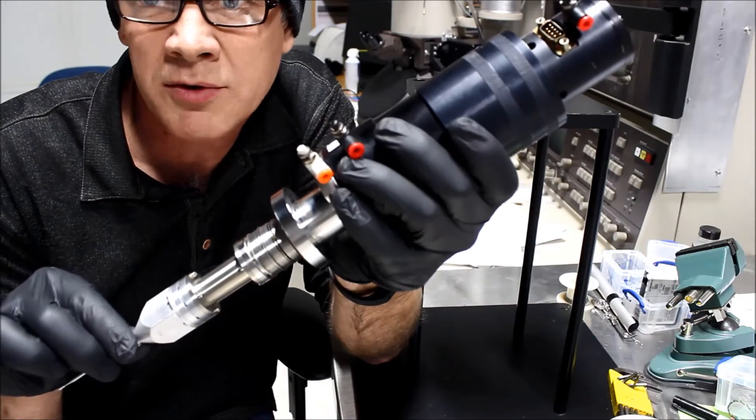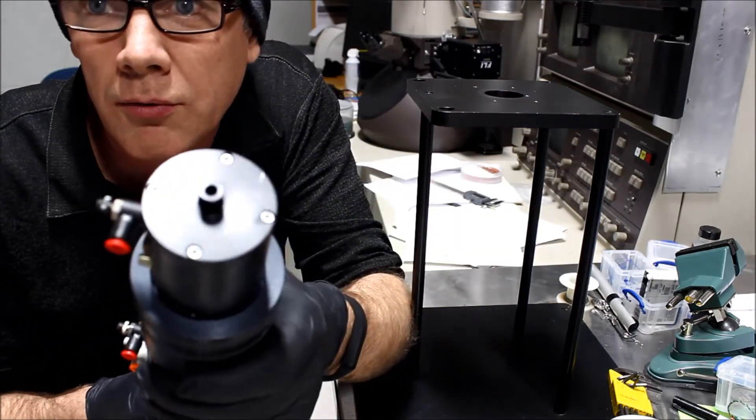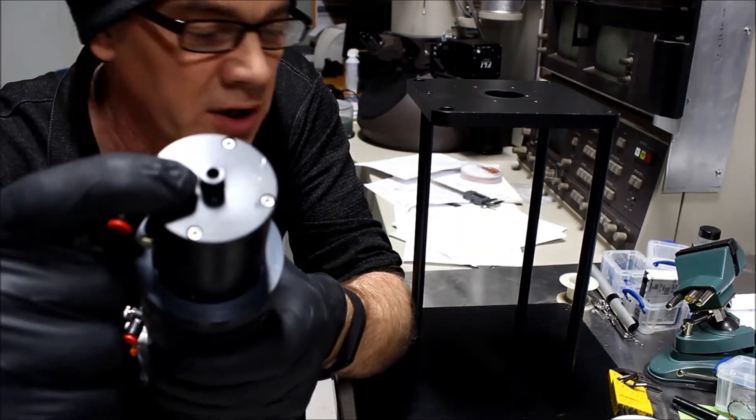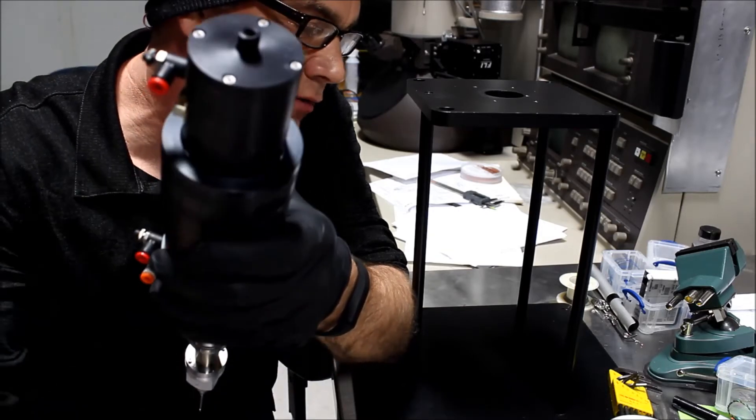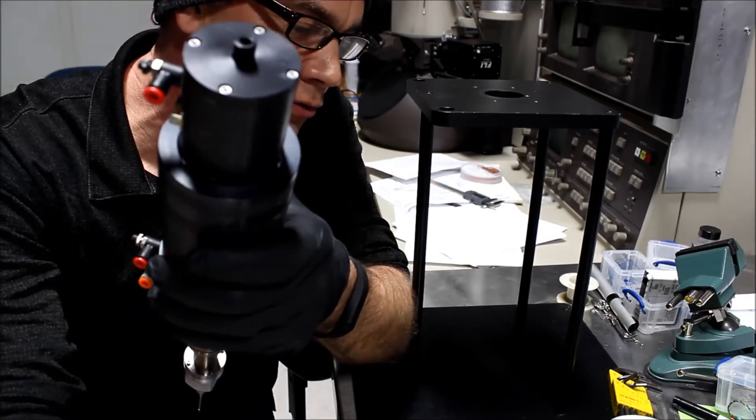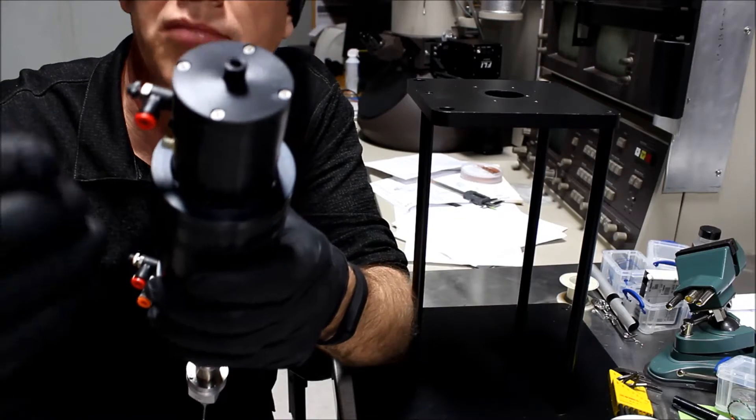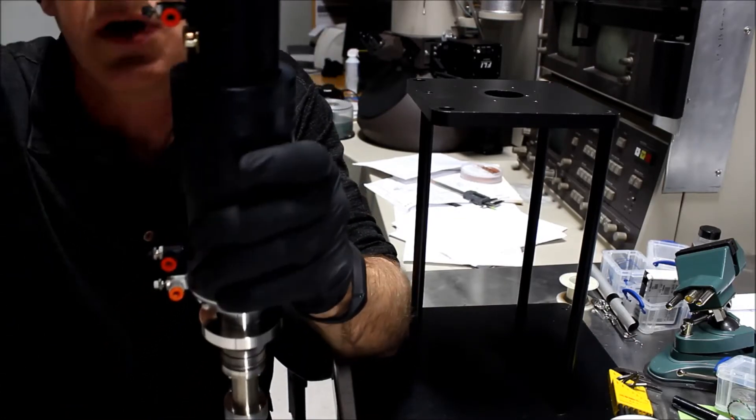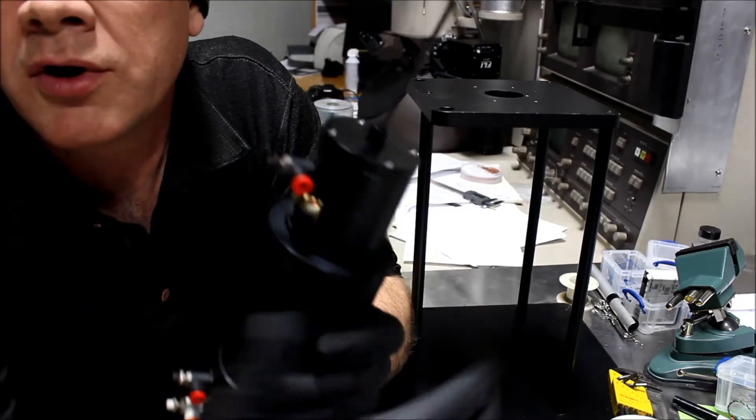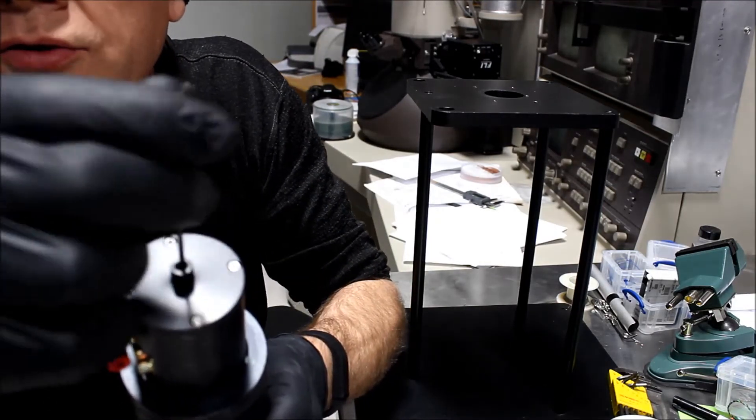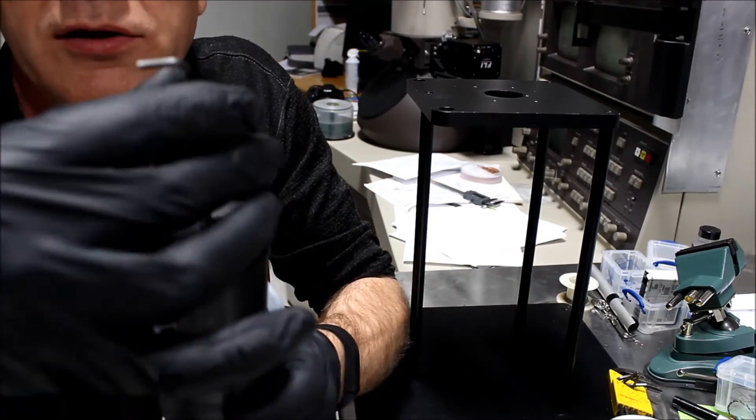We're going to turn this little thumb screw on the end. To do that, we have to take a 3/32nd ball driver and we have to loosen the set screw in the end. We just poke it in the little hole in the end, turn it counterclockwise, and that loosens the set screw.